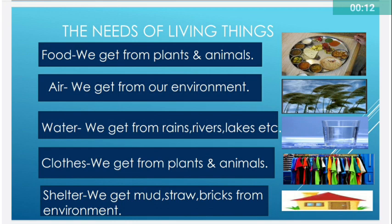The needs of living things. Food — we get food from plants and animals. We get air from our environment. Water — we get water from rains, rivers, lakes, etc. Clothes — we get from plants and animals. Shelter — we get shelter from mud, straw, bricks, from the environment.